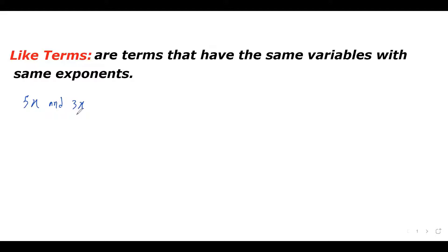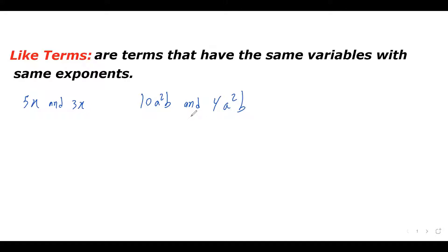Or let's say 10a squared b and 4a squared b. These two terms are like terms because they have the same variables — a squared b and a squared b. The exponents are the same, the variables are the same. We do not care about the coefficients; they can be different. We only care about the variables and the exponents on those variables.